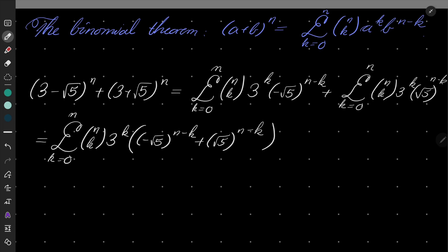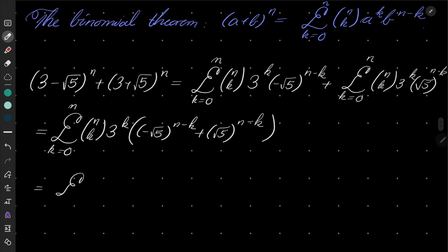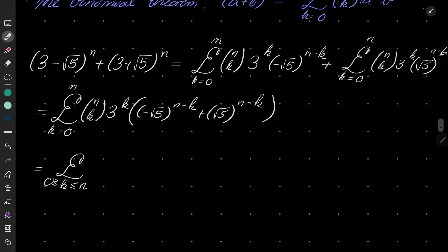We can write it separately as two different sums again, but different this time. The first sum will be over all k from 0 to n such that 2 divides (n-k). And the second sum will be over the remaining k, so when 2 does not divide (n-k).